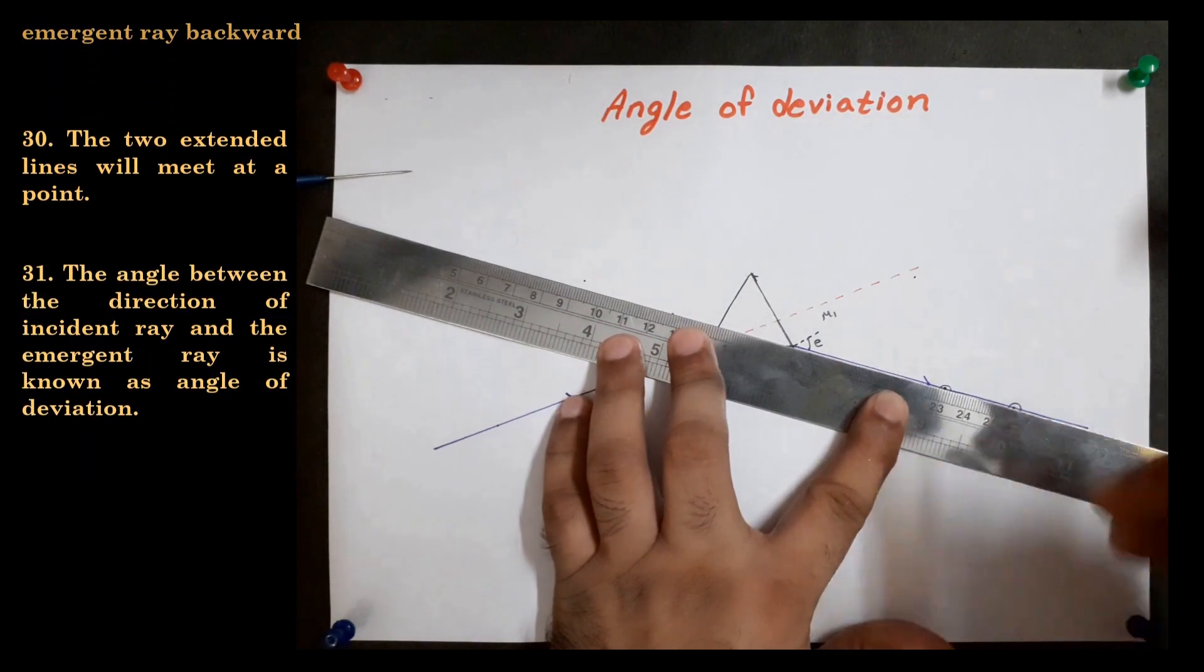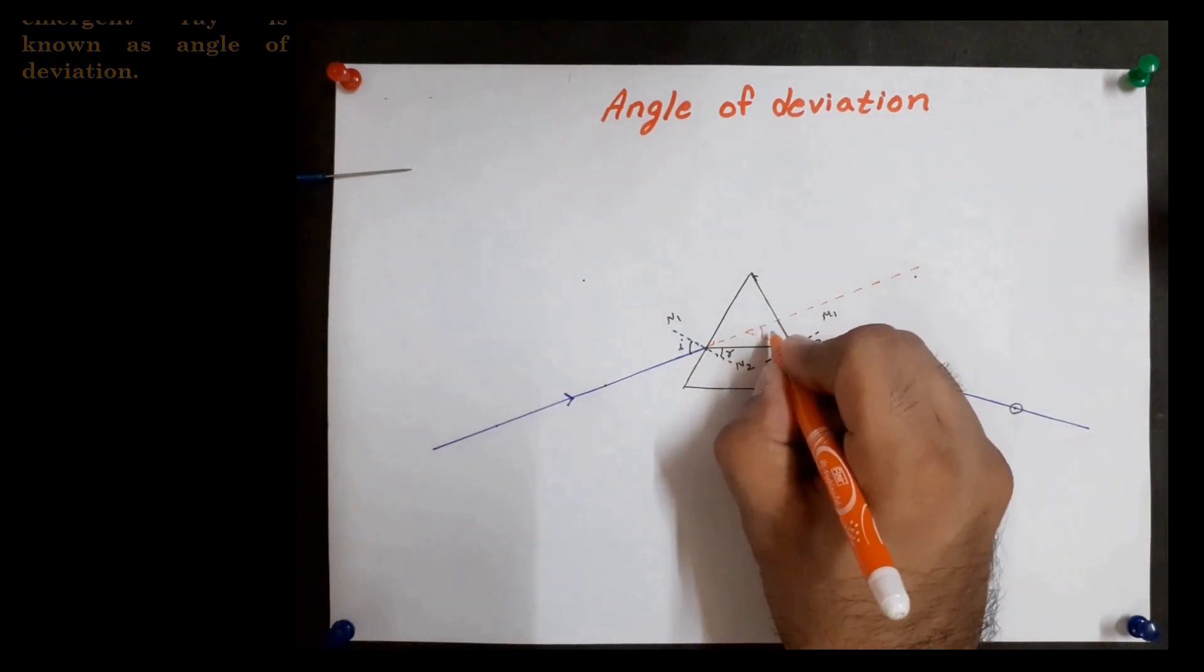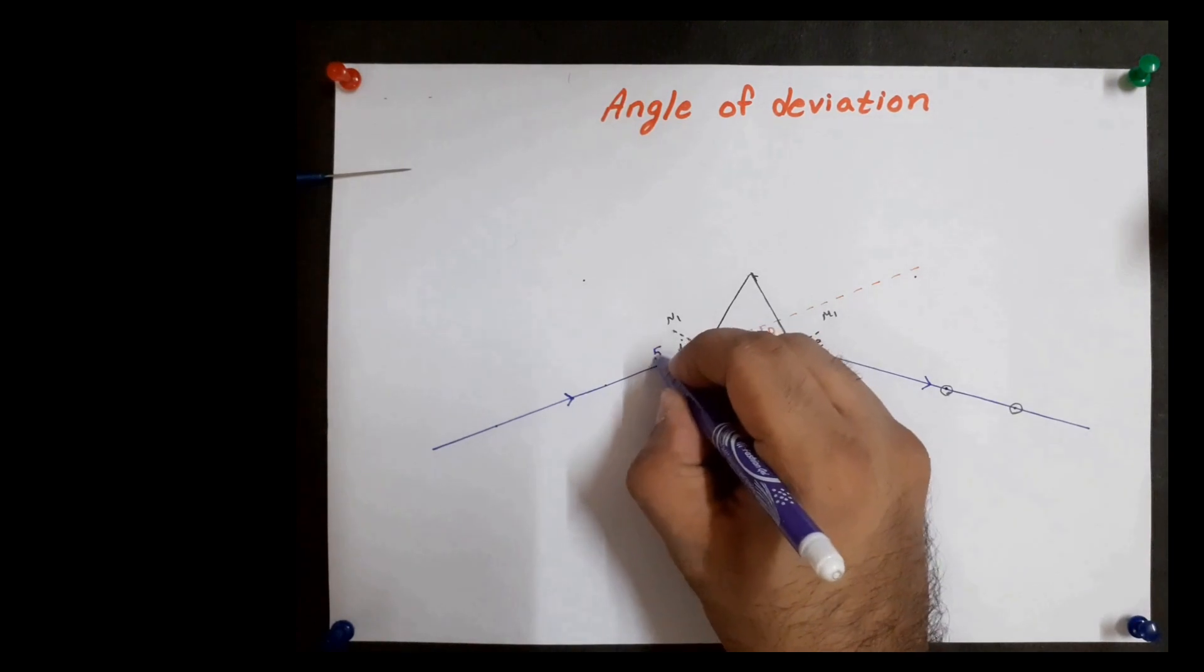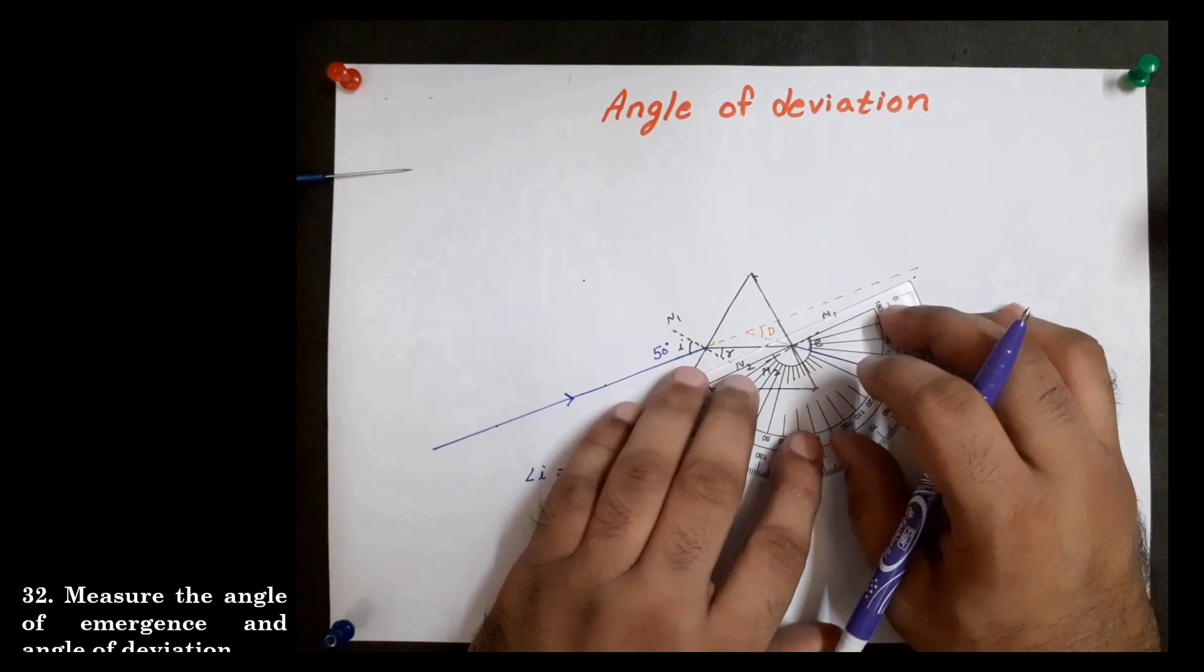These two extended rays will meet at a point. The angle between the direction of incident ray and the emergent ray is known as angle of deviation. Measure the angle of emergence and angle of deviation.